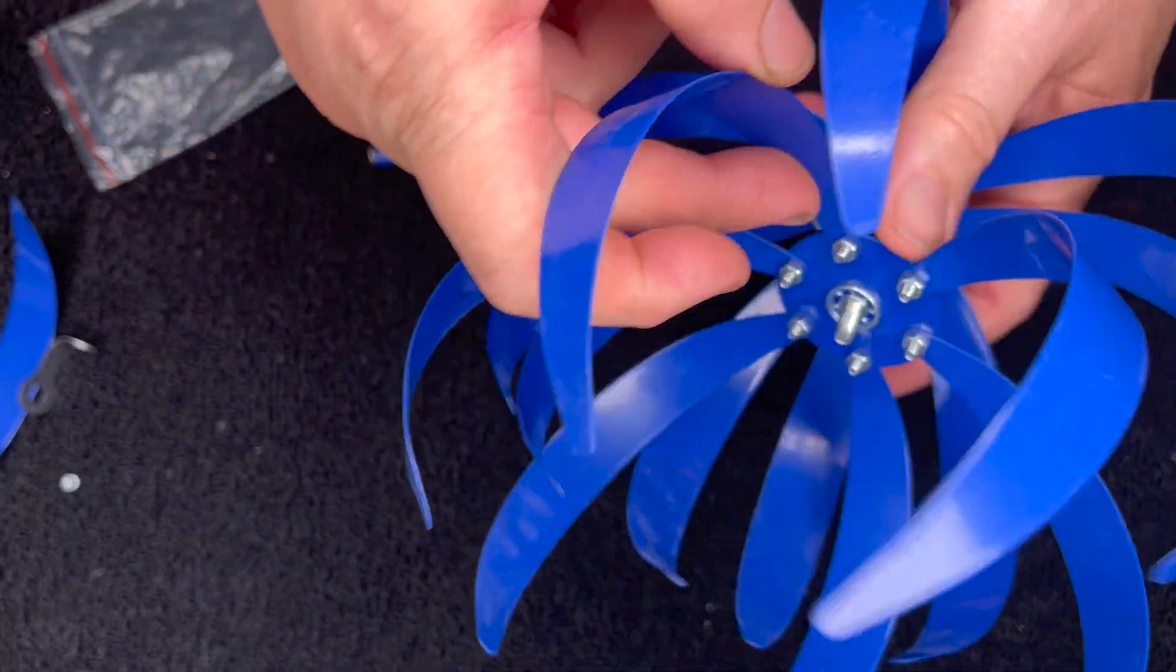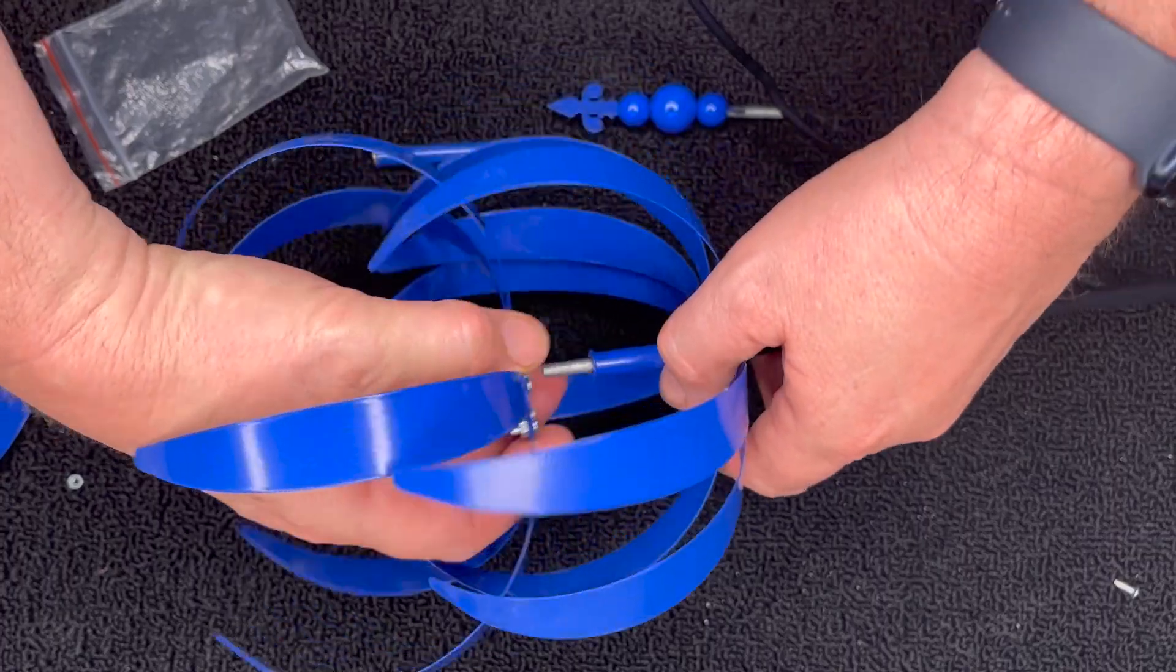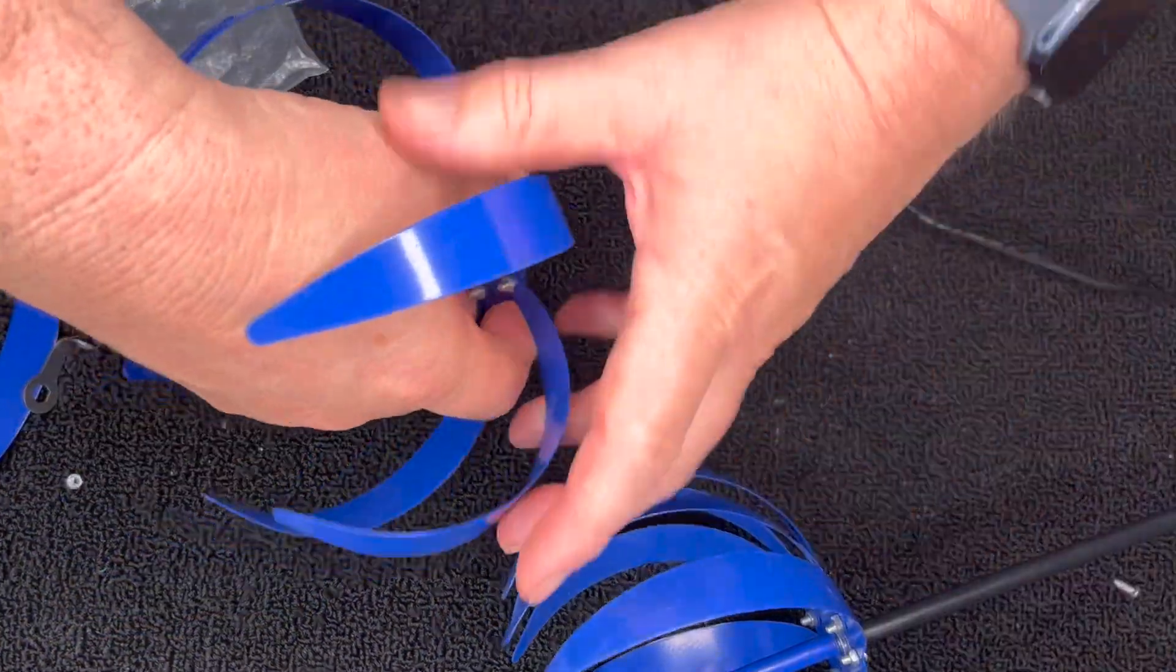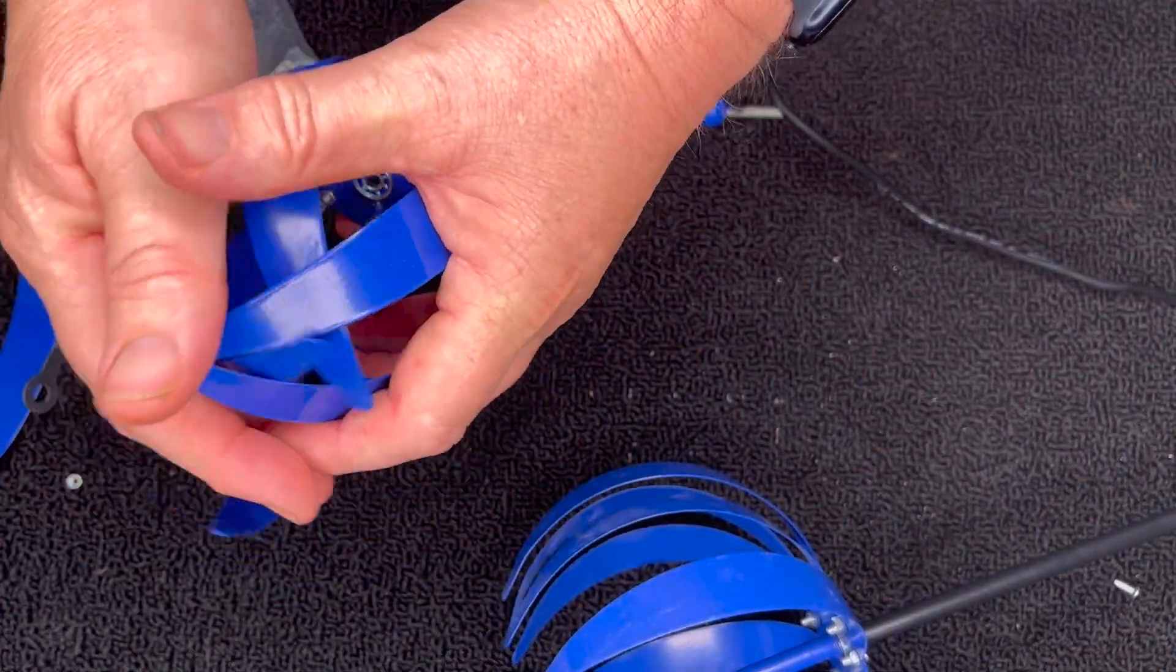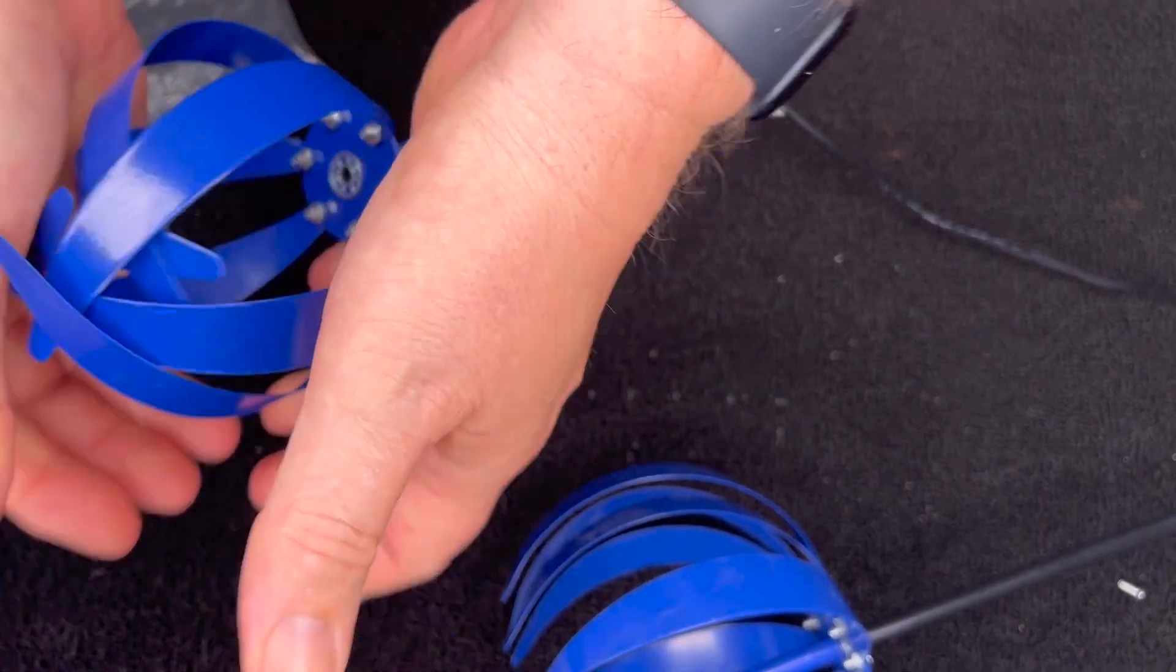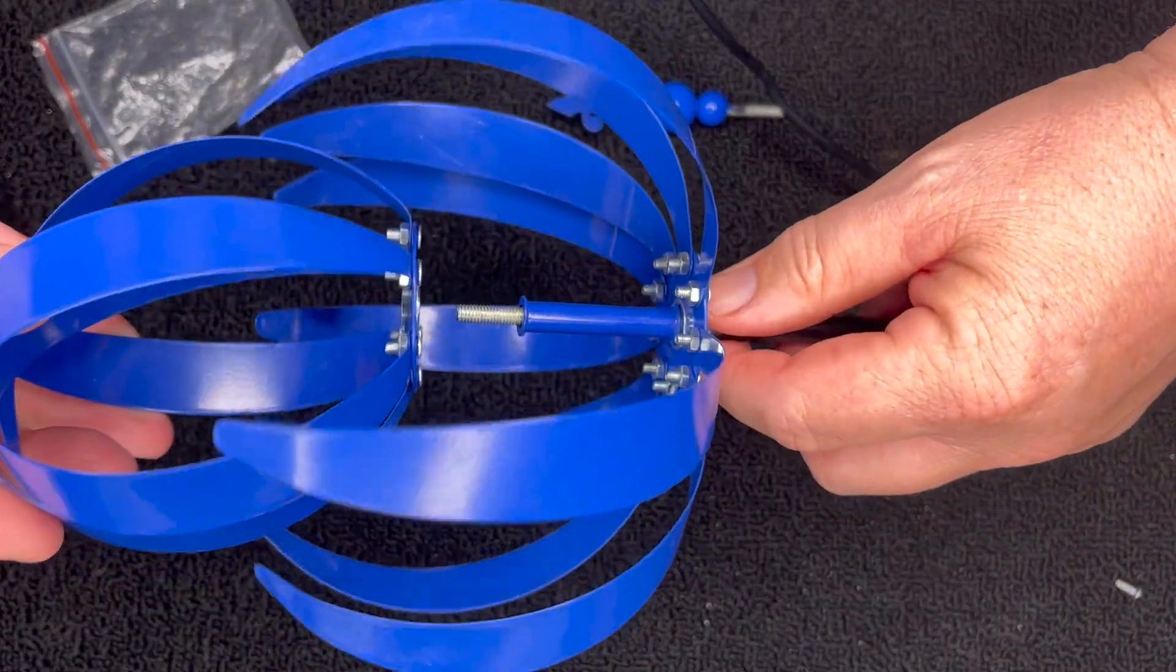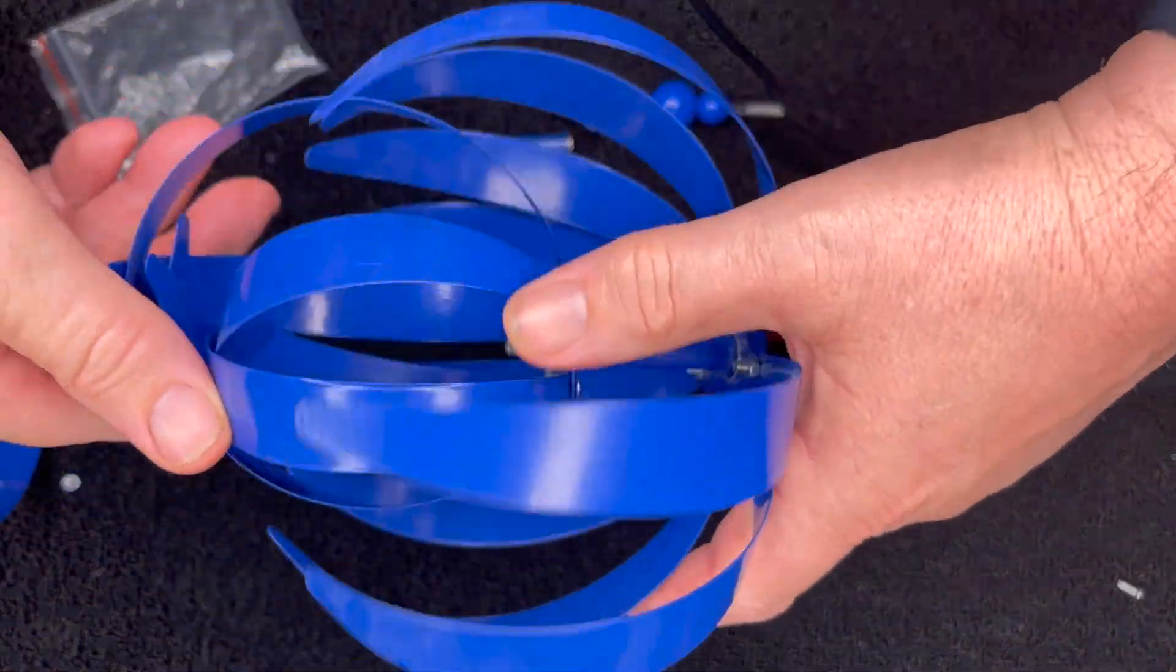Put it on the top of that. Now what you can do just so that these don't get tangled around each other, you can kind of take this one and bend it up like a little ball so that it goes a little bit tighter. That way when you put it on here it doesn't smash into the other one as much.